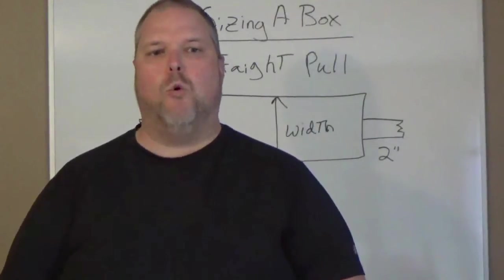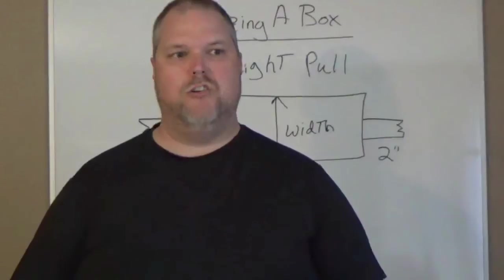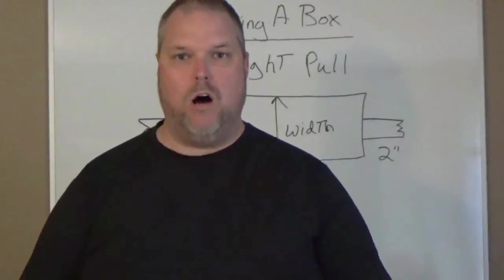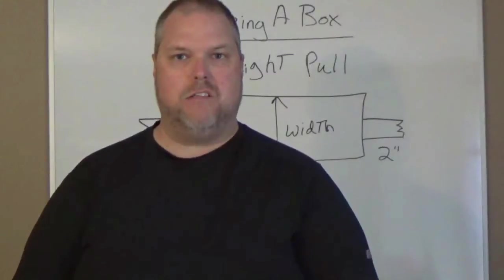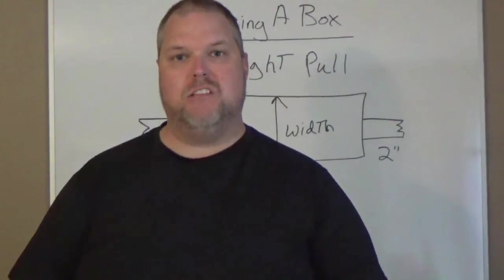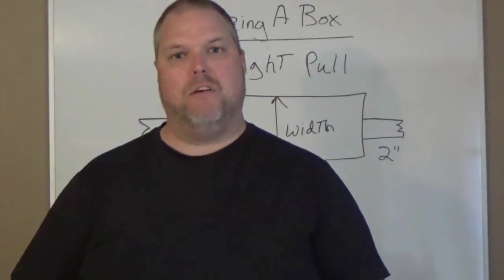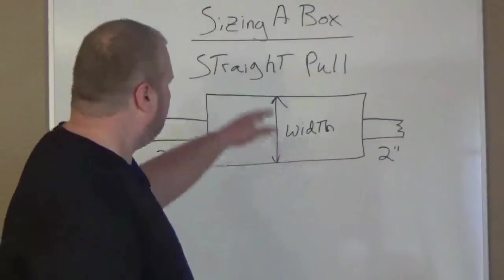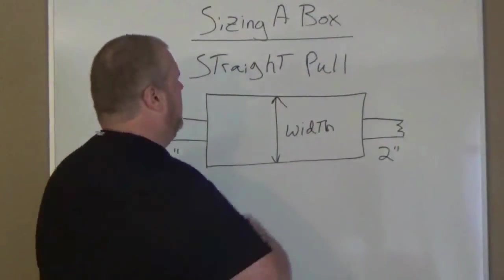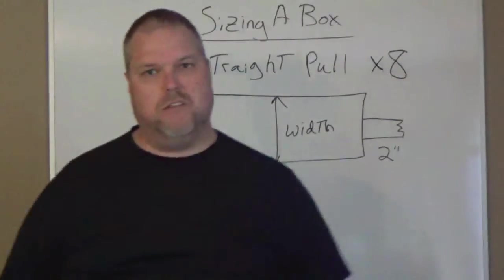314.28A states that number 4 or larger. 314.28A1 is going to tell us that we must multiply the size of the conduit by 8. So we have to multiply it by 8. If you remember, a straight pull is multiplied by 8, you're never going to miss it.